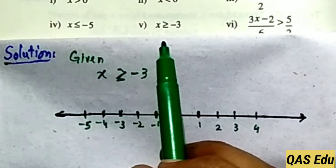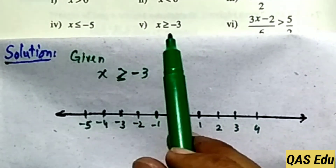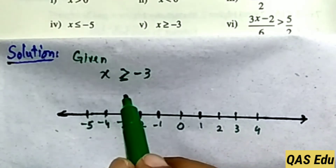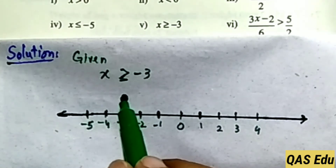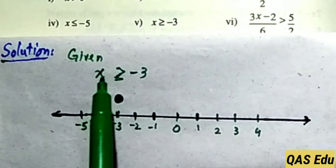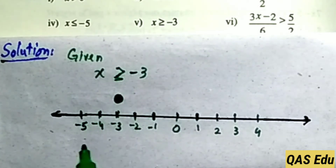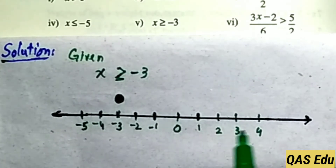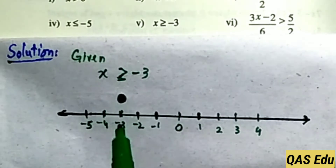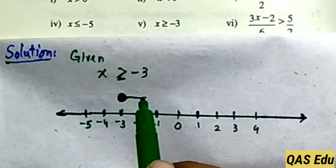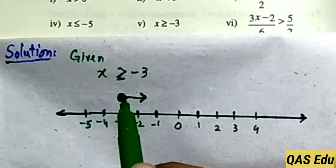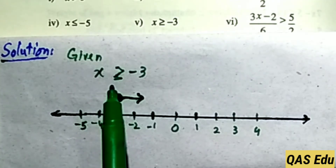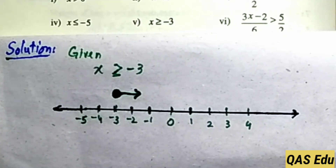Part 5: x is greater than or equal to minus 3. Since x equals minus 3, draw a filled circle at minus 3. Values greater than minus 3 are: minus 2, minus 1, 0, 1, 2, 3, 4 and so on. Draw an arrow pointing to the right to show x is greater than or equal to minus 3 on the number line.